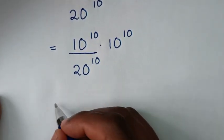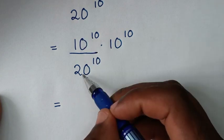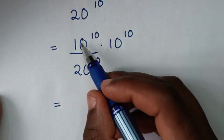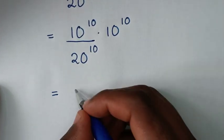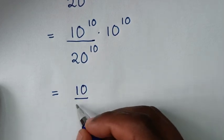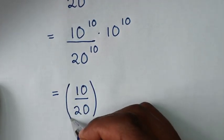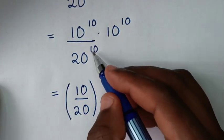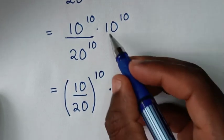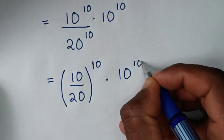Then in the next step it will be equal to: from here, division of exponents with the same power of 10, so it will be 10 over 20 — so here 10 over 20 — then bracket this same power of 10, times this exponent of 10 power of 10.